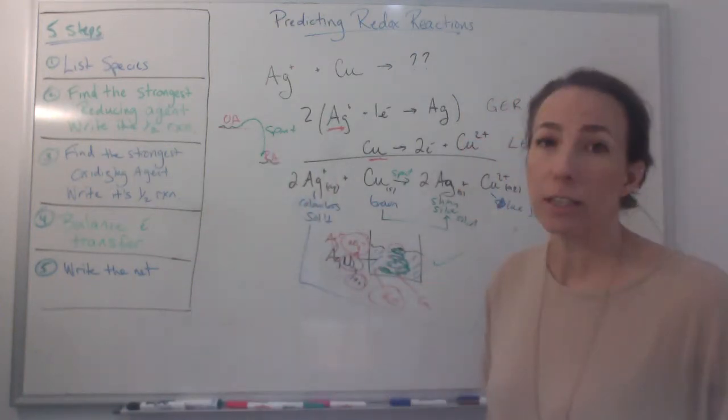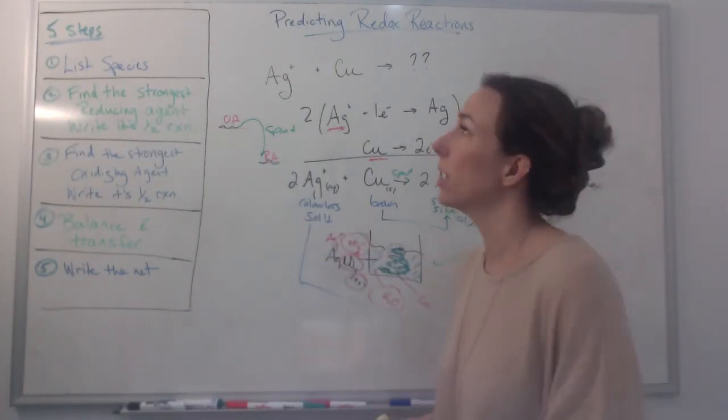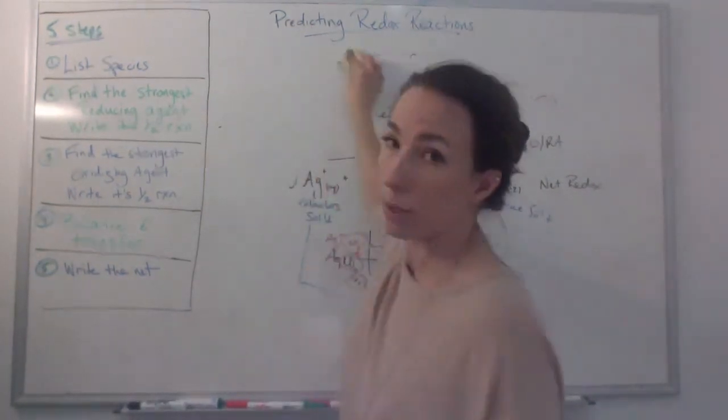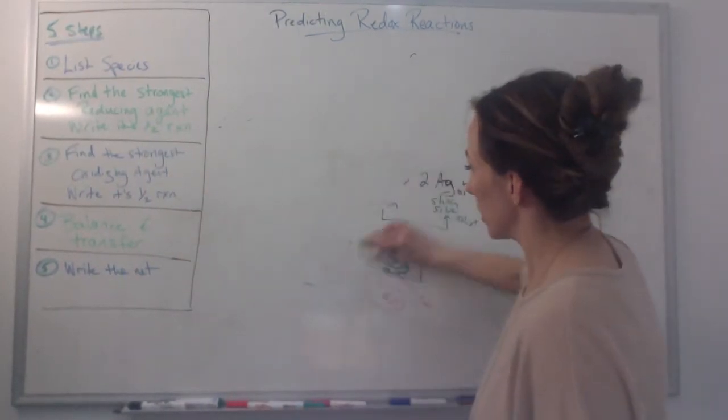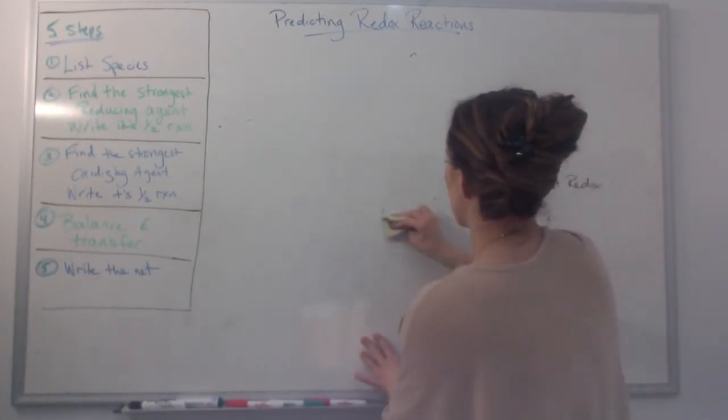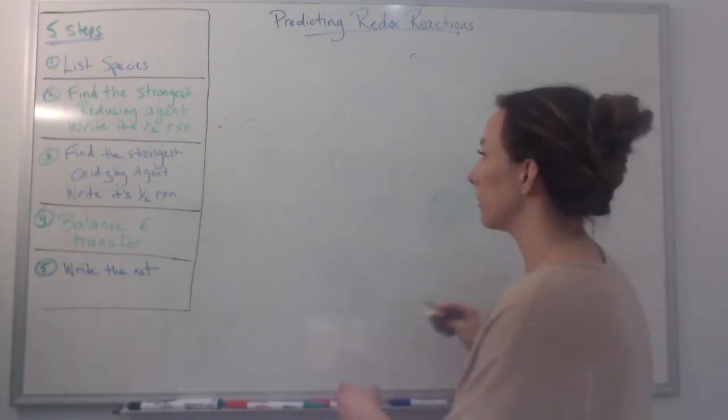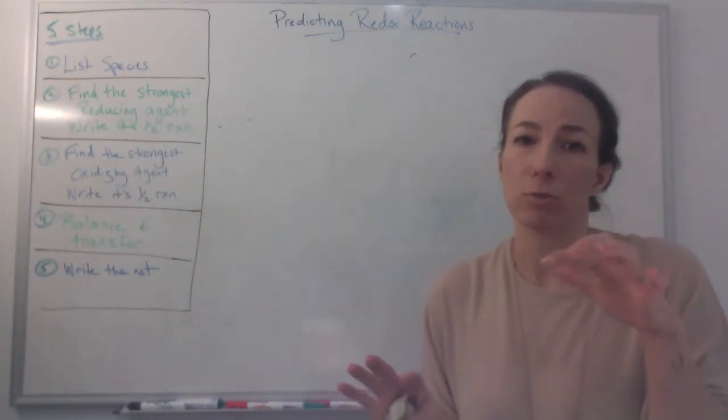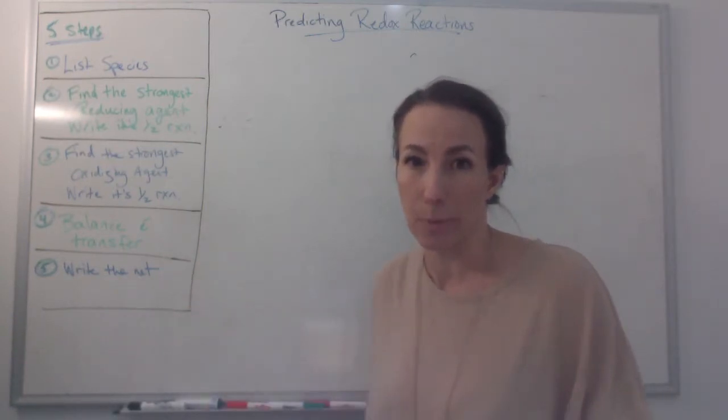So this is predicting redox reactions, which one is going to be our oxidizing agent, and which one is going to be a reducing agent, by following these five steps. So the five steps written here, and also written in your notebook, is to list our species, to find our strongest reducing agent, and then we're going to write its half reaction to find the strongest oxidizing agent, and write its half reaction. By find I mean in our data booklet, and then we're going to be right back to where we were before. We're going to have two half reactions written down, so we need to balance the electrons, and then write our net, just like we did with the simple ones.